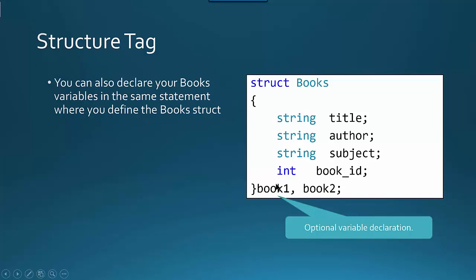Another way you can declare your variables is when you declare your struct, you can actually declare your variables right in the struct declaration. This will declare the struct and then make book1 and book2 two variables of type books. I don't generally recommend this approach — I think it makes more sense to keep them separate — but this is an option.